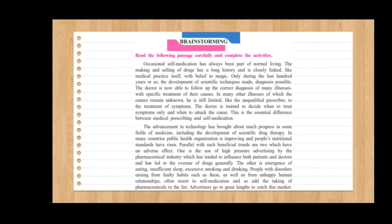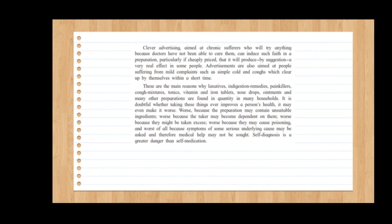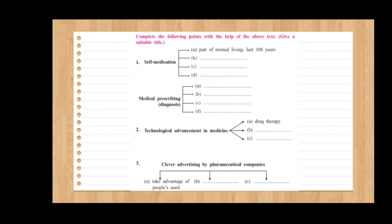Now my dear students, here you have one passage for brainstorming. Read the following passage carefully and complete the activity. You have to read the passage and make the diagram. The diagram has been made for you, but you will write the further points — what is self-medication, medical prescribing, diagnosis, and technological advancement in medicine. One point is done for you under self-medication, and one under the third point: clever advertising by pharmaceutical companies. You have to copy this into your notebook and fill in the rest of the blanks.